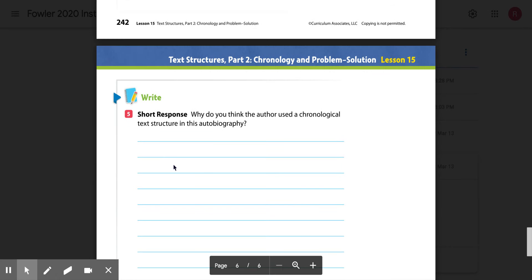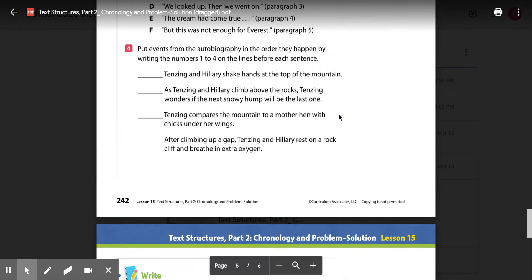And then number five says, why do you think the author used a chronological text structure in the autobiography? So why do you think he ordered things in the event of how they happened? Why do you think he used chronological order to write his essay?